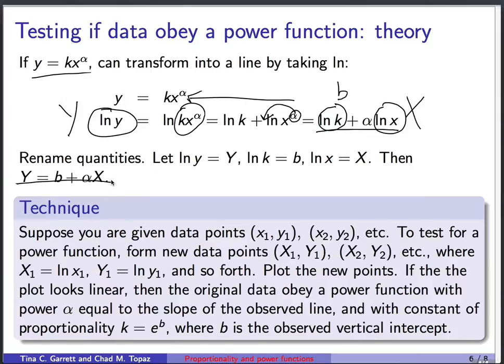And what this says in short is if there is a curve or data that obeys a power rule, if we take the natural log of y and the natural log of x and plot that, what we'll see is a line where the slope of the line is alpha, the unknown power. By the way, the y-intercept of the line b will equal the natural log of k, the constant of proportionality.